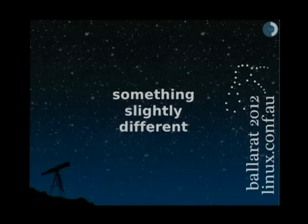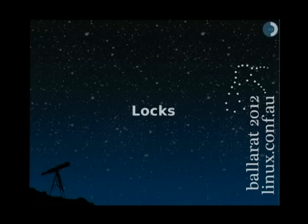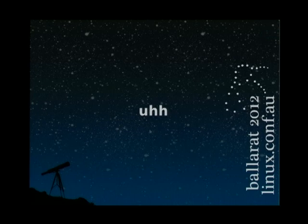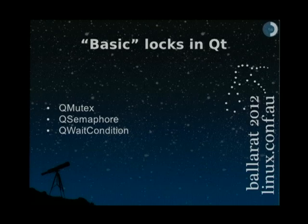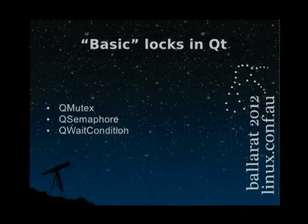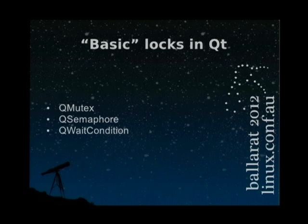Now let's switch to something slightly different: locks. The usual reaction when somebody talks about locks is 'ugh' because they're extremely boring and extremely dangerous. But somebody has to deal with them. The three basic locks in Qt are a mutex — everybody knows what it is — a semaphore, and a wait condition, which is basically a semaphore with a condition. So it's not about the number of resources, but when a specific condition is satisfied.